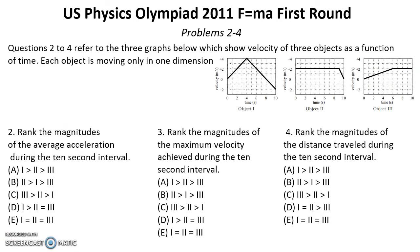Problems from second till fourth. Questions 2 to 4 refer to the three graphs below which show velocity of three objects as a function of time. Each object is moving only in one dimension. Problem number two: Rank the magnitudes of the average acceleration during the 10 second interval. Problem number three: Rank the magnitudes of the distance traveled during the 10 second interval. Problem number four: Rank the magnitudes of the distance traveled during the 10 second interval.